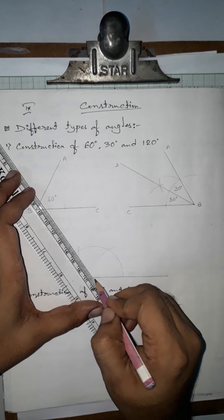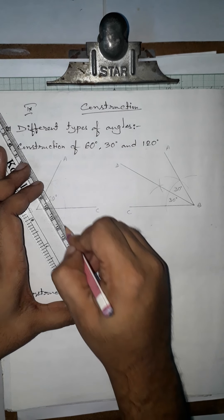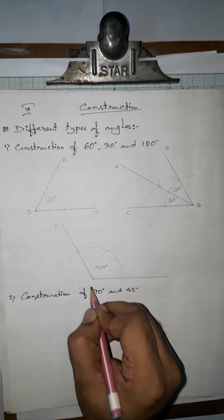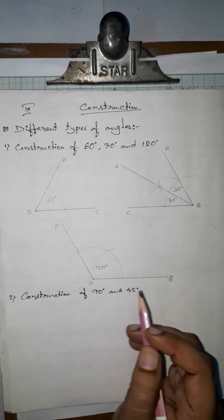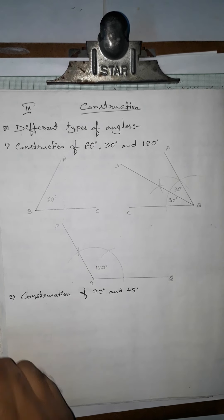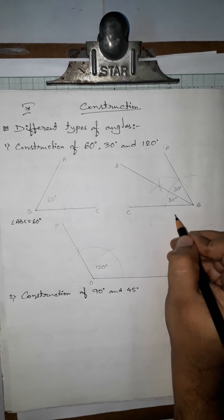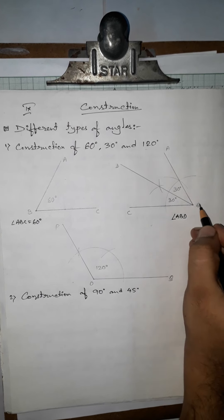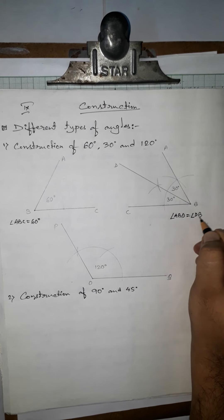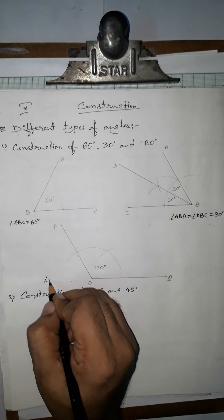From the vertex point, extending through the 120-degree intersection point gives us our 120-degree angle. So angle ABC = 60 degrees, angle DBC = 30 degrees, and angle POQ = 120 degrees. We record: angle ABD = angle DBC = 30 degrees, and angle POQ = 120 degrees.